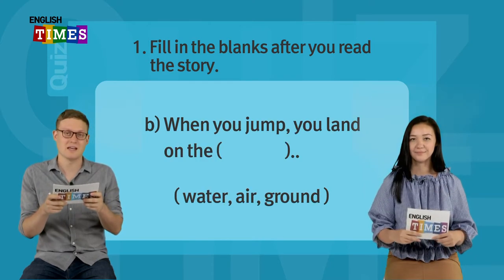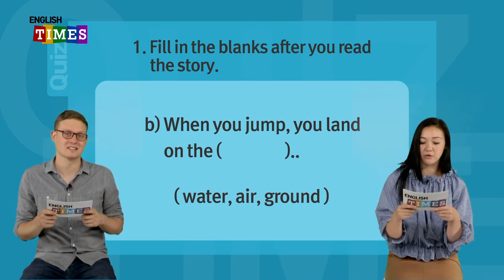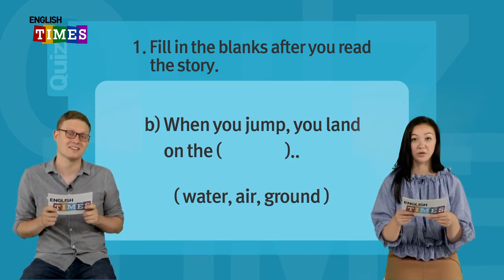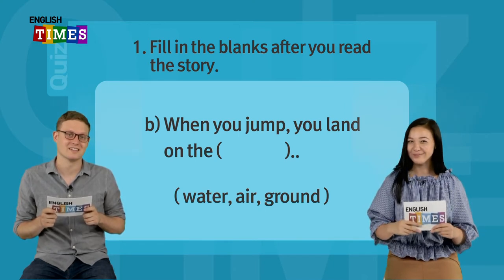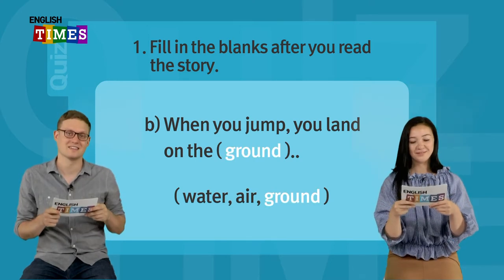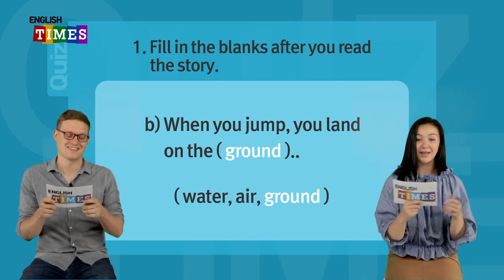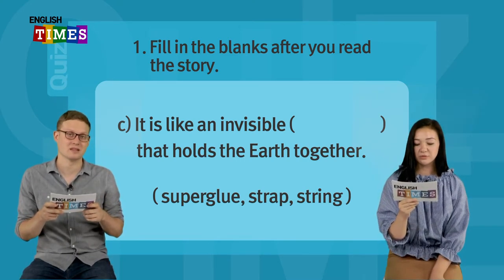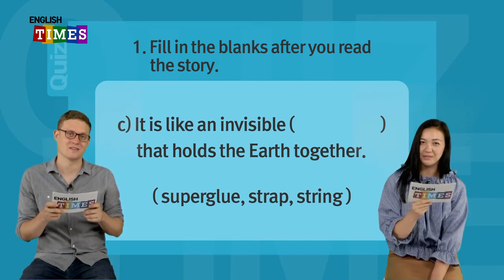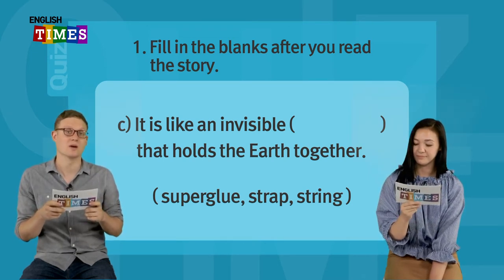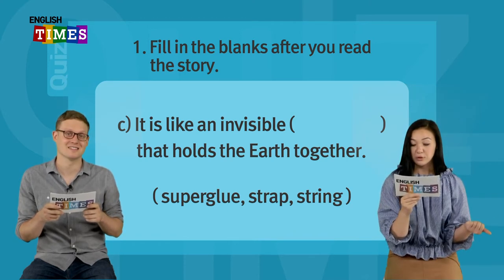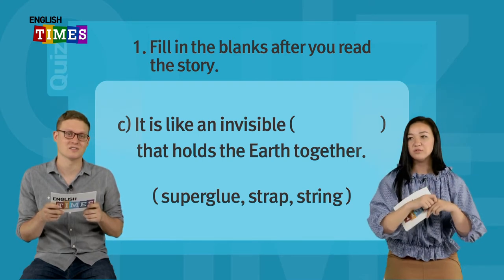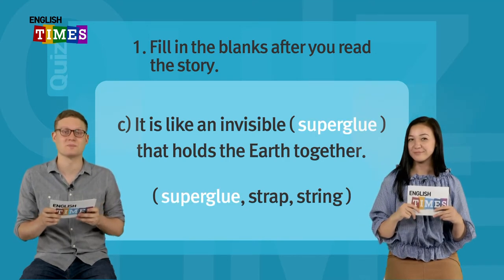B: When you jump, you land on the blank — you land on the water, the air, or the ground? The answer is ground. When you jump, you land on the ground. C: It is like an invisible blank that holds the earth together — invisible superglue, invisible strap, or invisible string? The answer is superglue. It is like an invisible superglue that holds the whole earth together.